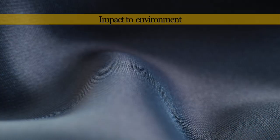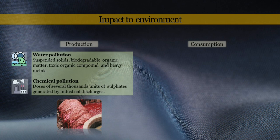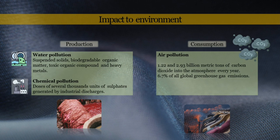The production of silk also impacts the environment. In terms of production, it causes water pollution — toxic waste found in water includes suspended solids, biodegradable organic matter, toxic organic compounds, and heavy metals, affecting fish and aquatic organisms. It also causes chemical pollution due to several thousand units of sulfates generated by industrial discharge.